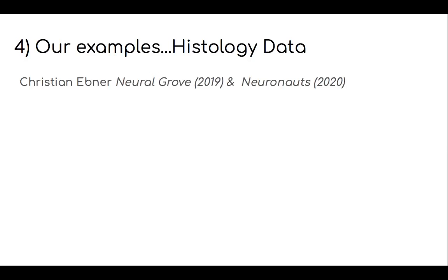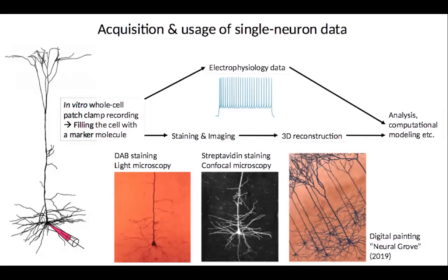He provided me with this figure. During the recording on the left, biocytin is introduced by a patch solution — biocytin is not visible itself, it's a marker molecule. Then there are two staining methods he used to create this digital painting, called Neural Grove, on the right. This one has a little more resolution because of the confocal microscopy and the streptavidin. He's then created this amazing piece and taken it a single step further, also doing 3D etching — a sculpture which he actually used as a trophy initially, and these will be for science awards within the lab. These will be visible in the upcoming exhibition.